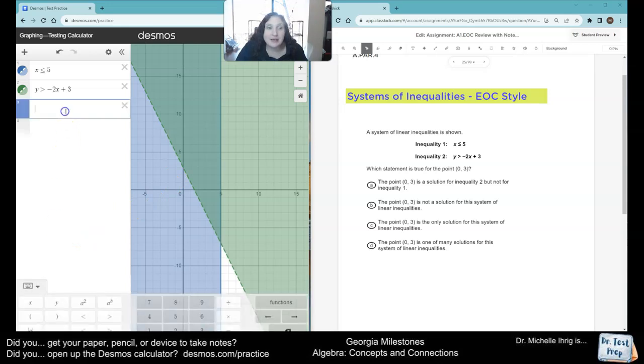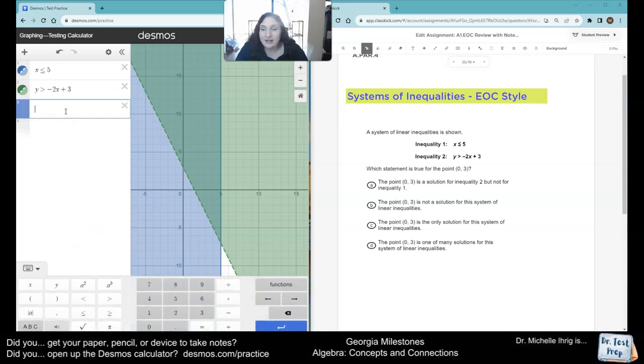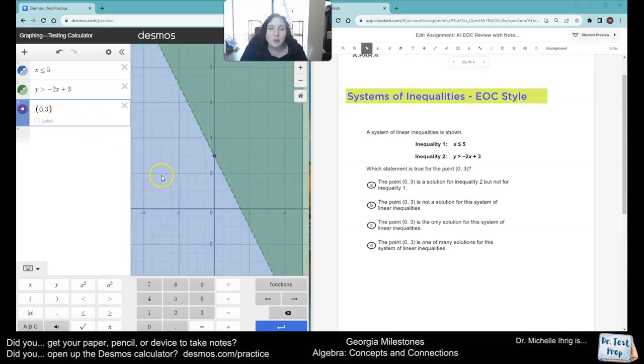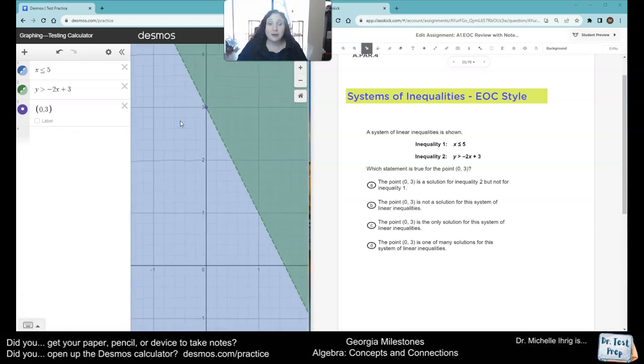All right, you know me. We're going to type in our point. And we've got 0, 3 is the point that they want us to think about. So look at this point. We're going to zoom in. 0, 3,